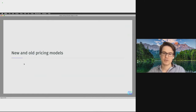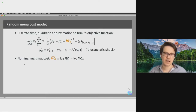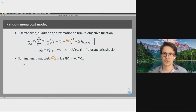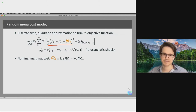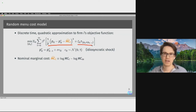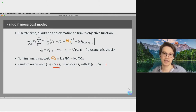I'm going to introduce the two classes of models first. Starting with random menu cost models in discrete time, using a standard quadratic approximation to the firm objective function. Here firms minimize a cost with two components: the first corresponds to a cost from having the current price deviate from the optimal price, which consists of an idiosyncratic random walk component as well as the aggregate shift in nominal marginal costs. The second component corresponds to the menu costs paid when the price is changed. Those menu costs are random, coming from a two-point distribution — either zero (free adjustment) or equal to a constant — parameterized by the probability of free adjustment, lambda.